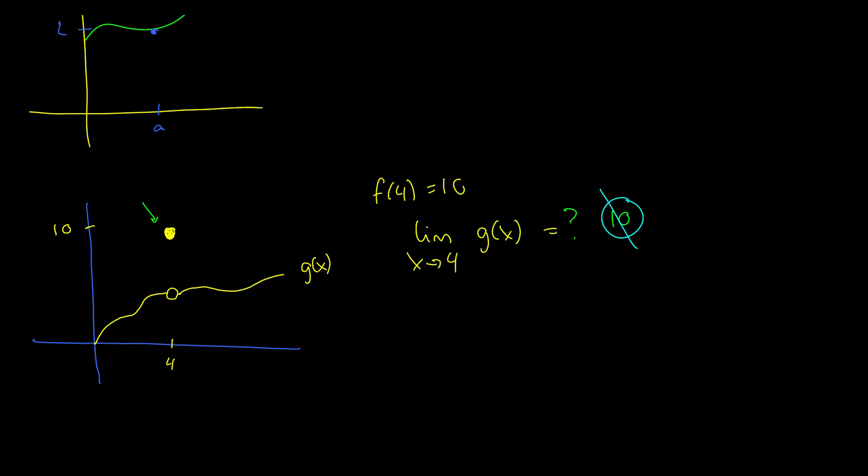because if you remember from our definition, we have to take a look at the limit as x approaches four from the right of g of x, and the limit as x approaches four from the left of g of x. And what are these values? Well, let's take a look here. We're going to write in some values, and we're going to say that this point right here where this gap is,